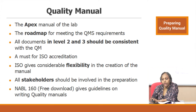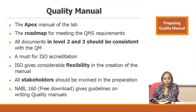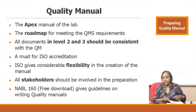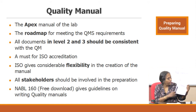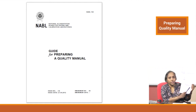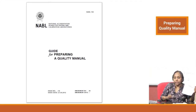The quality manual is a must for ISO accreditation. ISO gives considerable flexibility in its creation, and a very important point is that all stakeholders should be involved in the preparation of the manual. There is a document called NABL 160 — a free download — which gives guidelines on writing quality manuals. It is very helpful in writing your laboratory quality manual.